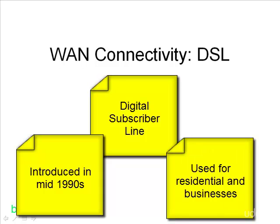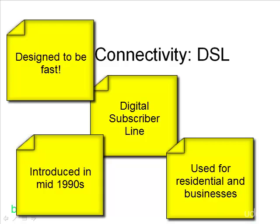As DSL got more and more popular, it came to replace analog modems. The primary reason why it was so favorable when compared to the analog modem was that it was a lot faster when it came to Internet access. DSL was designed primarily to offer fast Internet access — that was its purpose. Analog modems, on the other hand, were originally designed for two PCs to connect to each other. So DSL by design was meant to be better, and it was.